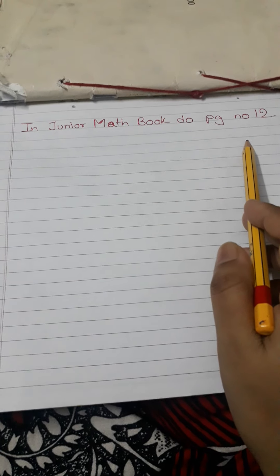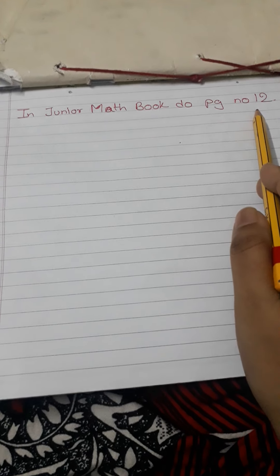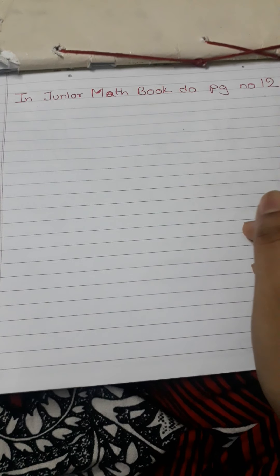And in your junior book you will do page number 12. Only page number 12 you will do in your junior book.